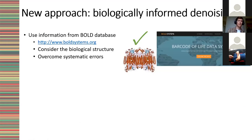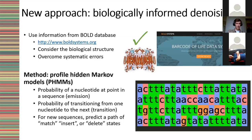The new approach I've been developing is a biologically informed denoising method. It uses the information on the BOLD database and the fact that CO1 is an important protein-coding gene, allowing us to consider the biological structure and training data in BOLD to help overcome systematic errors associated with DNA sequencers and denoise our data.